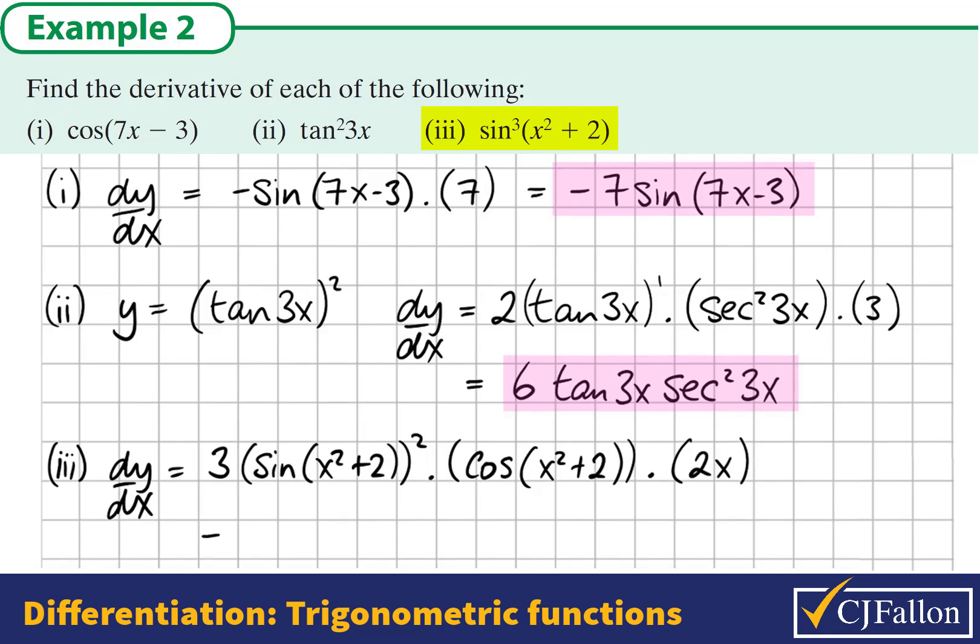This is our solution. We can neaten it a little bit in how we write it. 3 times 2x is 6x. We write it as 6x sine squared of the angle times cosine of the angle, and note again the angle never changes.